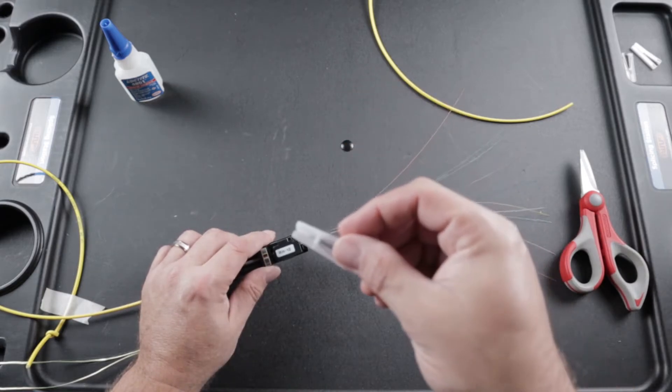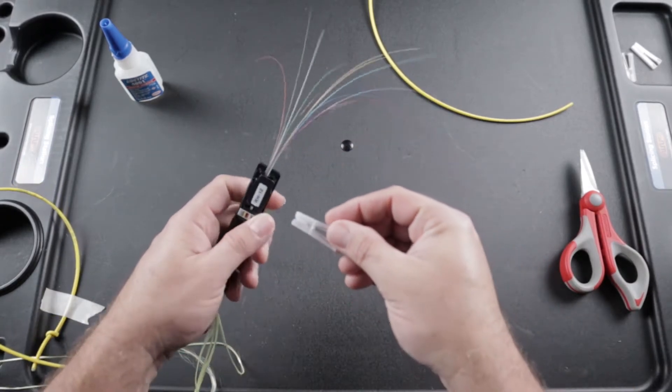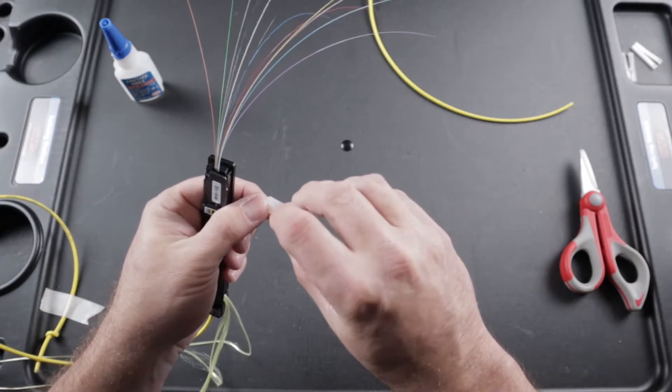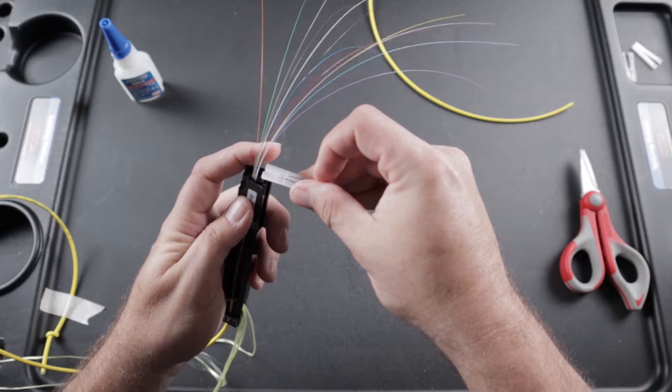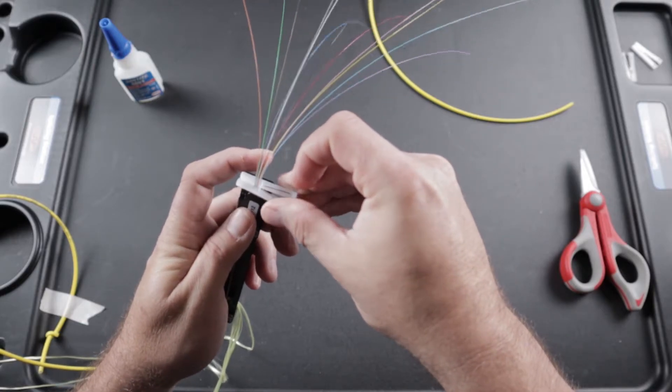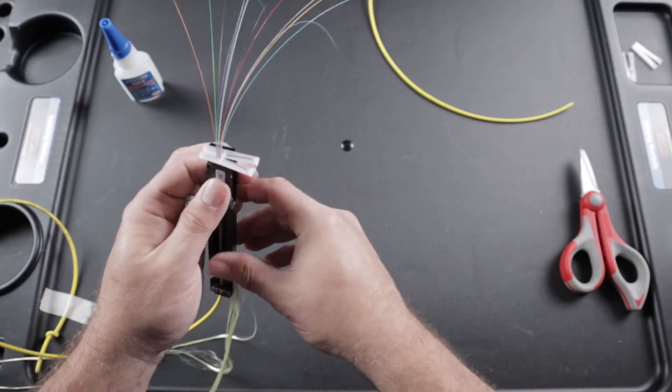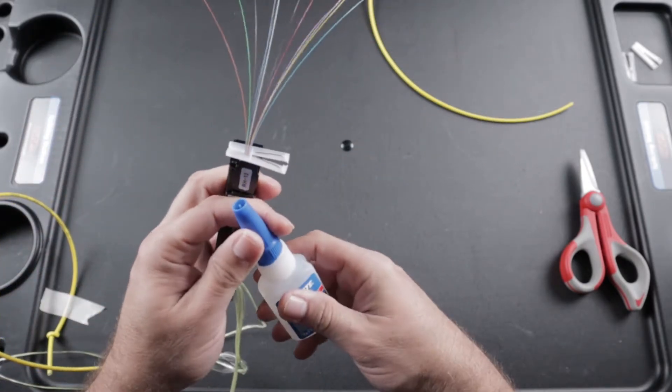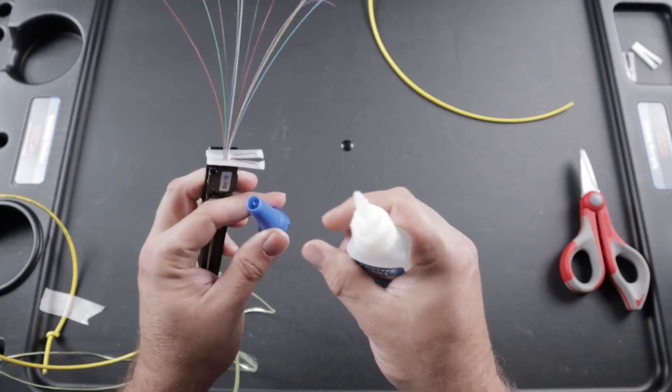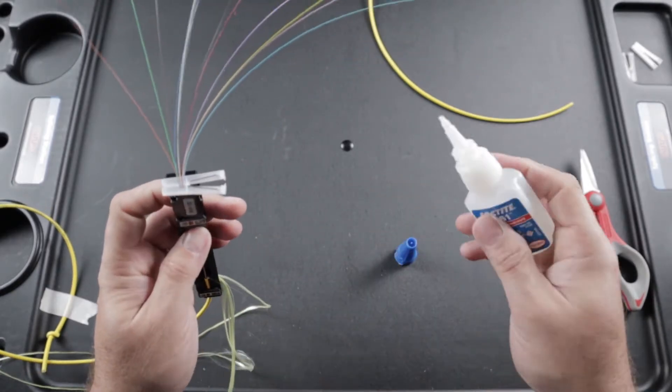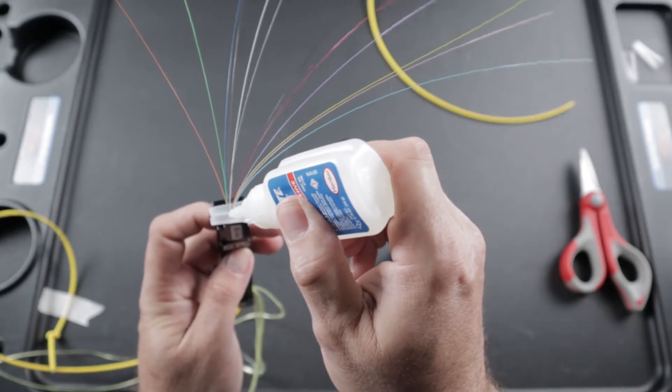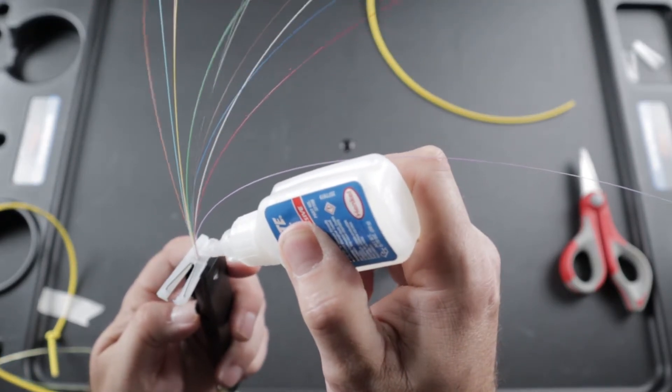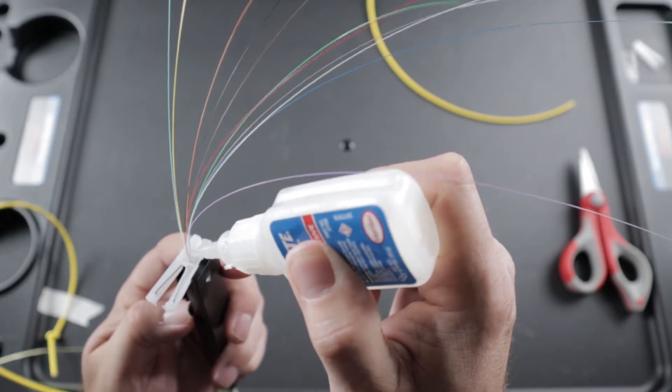Then, take a disposable ribbonizing clip by US Connect and place with well side up on your fiber. Then, using Loctite 4861, place a drop of adhesive on both sides of your holder, filling the well.